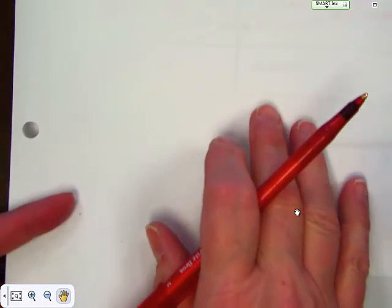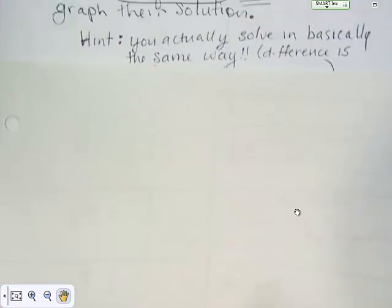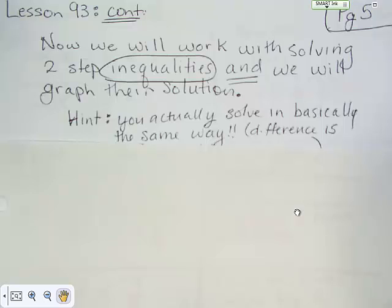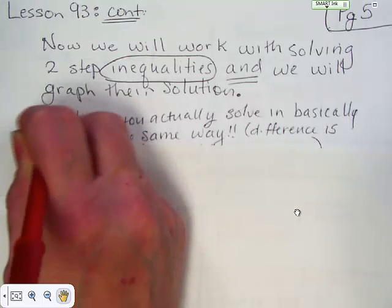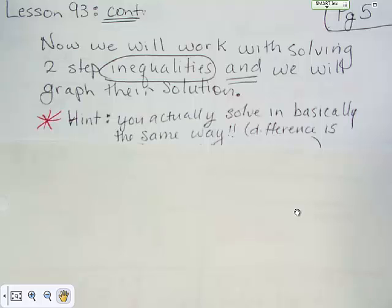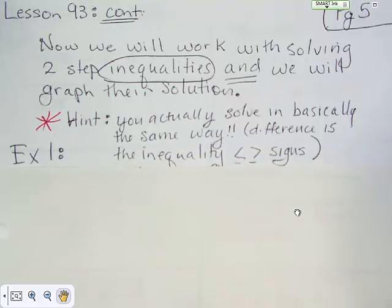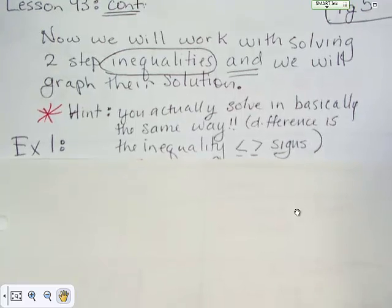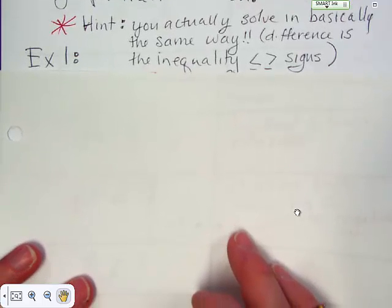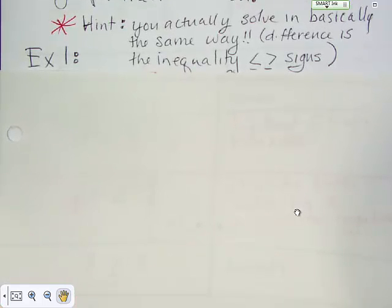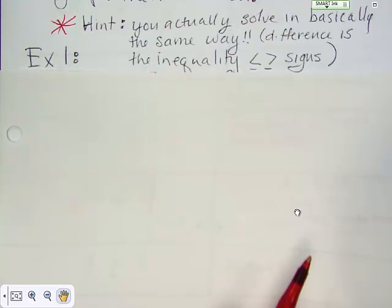We've been working with regular equations up to this point. Let's do a couple of inequalities. Now we're going to work with and solve two-step inequalities, and we'll graph their solution. You actually solve in basically the same way — the only difference is the inequality signs. You can mentally think you're solving an equation, but it has an inequality sign. Eventually those inequality signs will become more important, especially when you start working with dividing or multiplying with negative numbers, but right now we're just subtracting and adding.